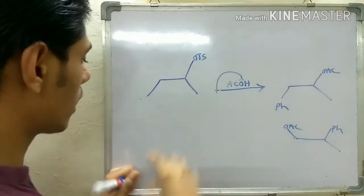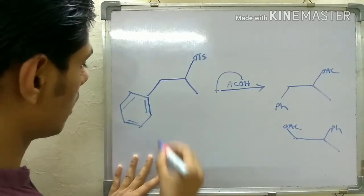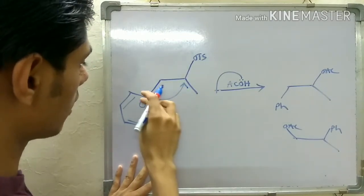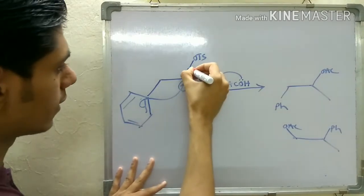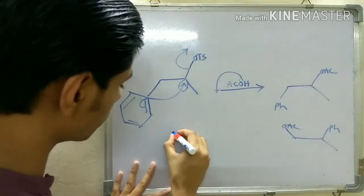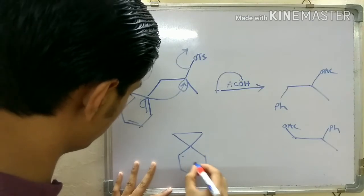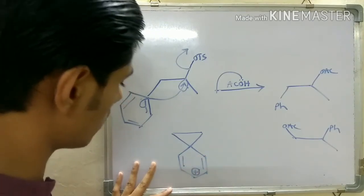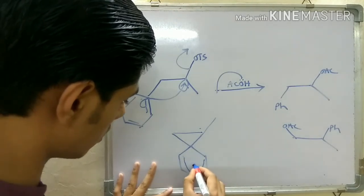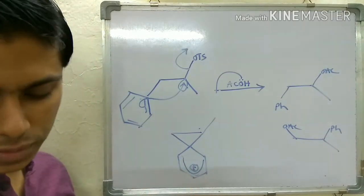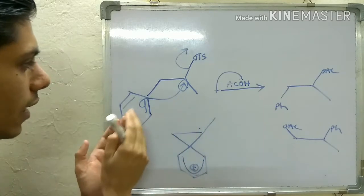You have to draw the phenyl ring in its proper way. This pi electron cloud can participate - it can participate here because the LUMO of the C-OTs bond is here. This pi electron cloud attacks the LUMO, which facilitates the departure of the OTs group, and you get this particular intermediate. You can represent this positive charge as a resonance-stabilized bridged cation. This is the same thing that happens in electrophilic aromatic substitution, where the pi electron cloud attacks the electrophile.